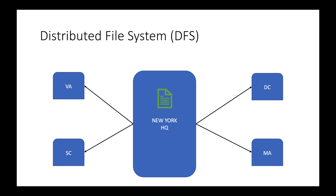Users in the Virginia office use a server that's local to that branch, and if they make any changes, DFS will replicate those changes to the other sites plus corporate headquarters. The cool thing about DFS is that if a situation happened with our Virginia office and the server went down, users at the Virginia office would be connected and redirected automatically to the nearest file server to that location.